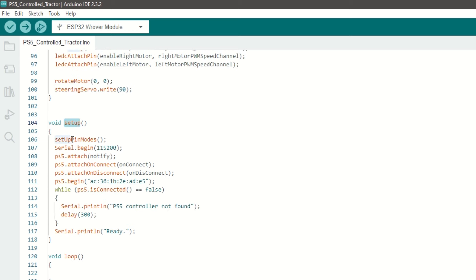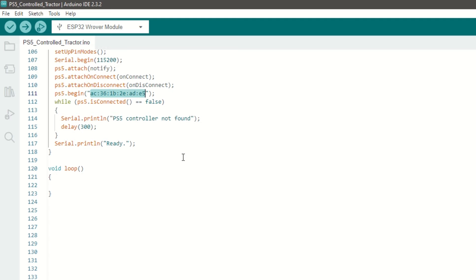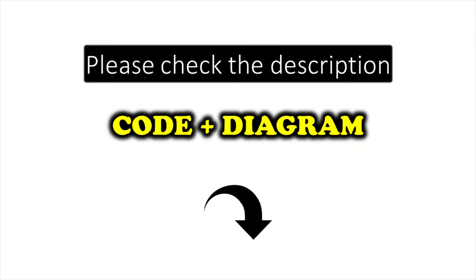Inside setup function we will call setup pin mode function. We will attach notify and on connect callback function. Also we will attach on disconnect callback function. Then begin the PS5 communication using the MAC address of your controller. We can keep loop function empty. I have provided the link to the code in the description below. You can upload it directly.